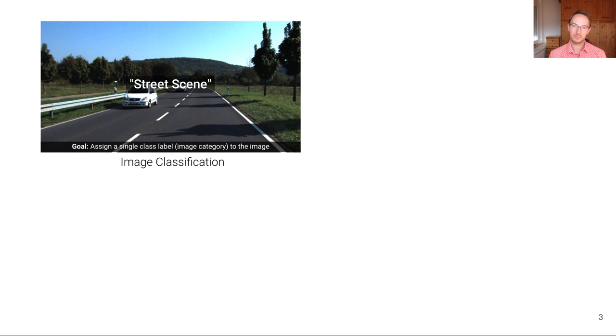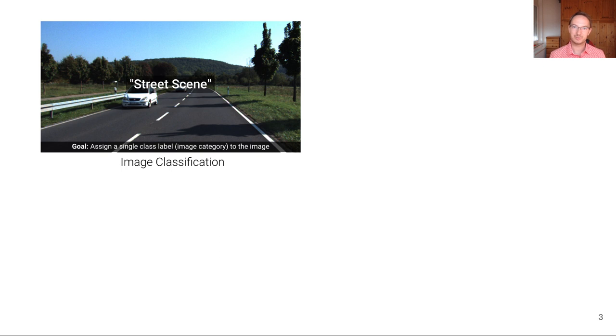Before we start, let's have a brief look at what these problems are and how they differ. In image classification, we're given an image and the goal is to assign a single class label — an image category — to the entire image. For example, if we have a set of 50 possible class labels, for this particular image we want to assign the label 'street scene'. That's one discrete number assigned to the entire image.